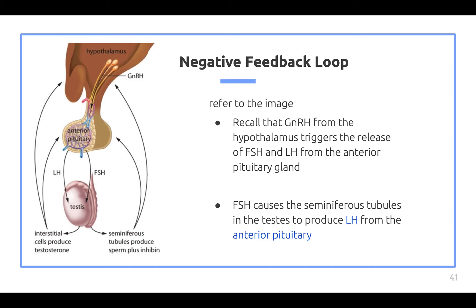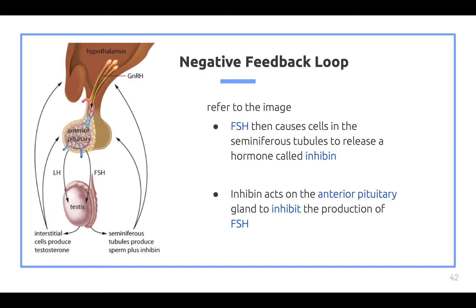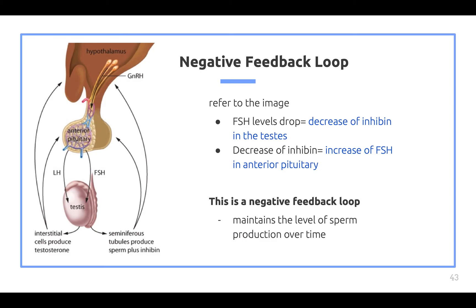Now the negative feedback loop: GnRH from the hypothalamus triggers the release of FSH and LH from the anterior pituitary gland. FSH causes the seminiferous tubules in the testes to produce sperm. FSH also causes cells in the seminiferous tubules to release a hormone called inhibin. Inhibin acts on the anterior pituitary gland to inhibit the production of FSH. As FSH levels drop, this decreases inhibin in the testes, and the decrease in inhibin increases FSH in the anterior pituitary — this is called a negative feedback loop and it maintains the level of sperm production over time.